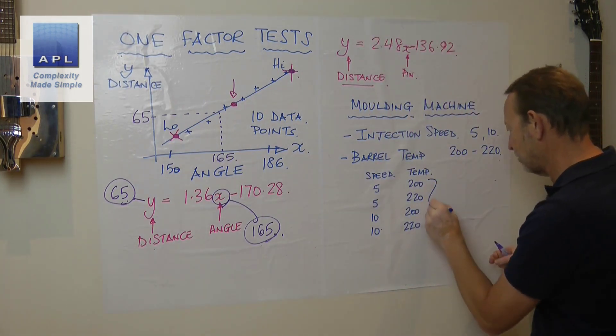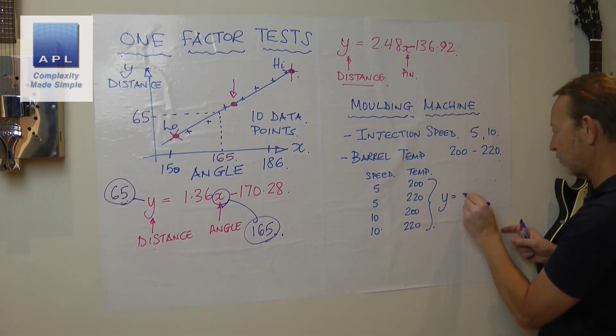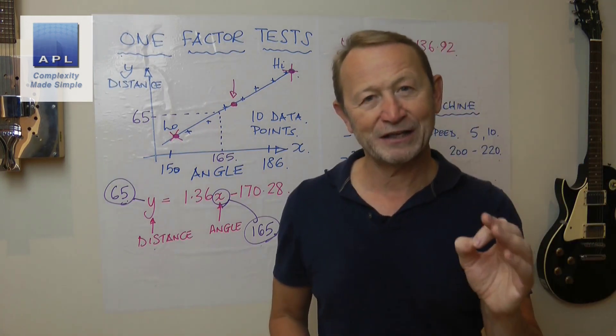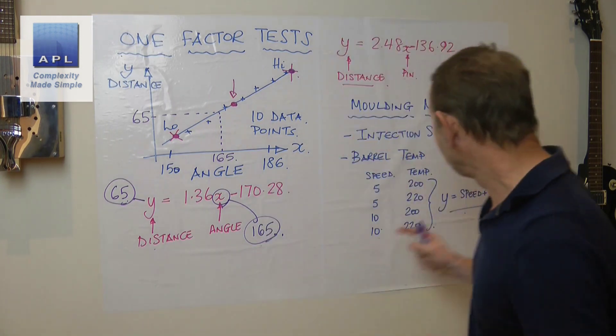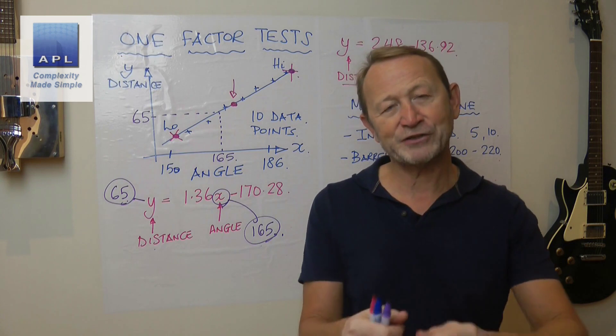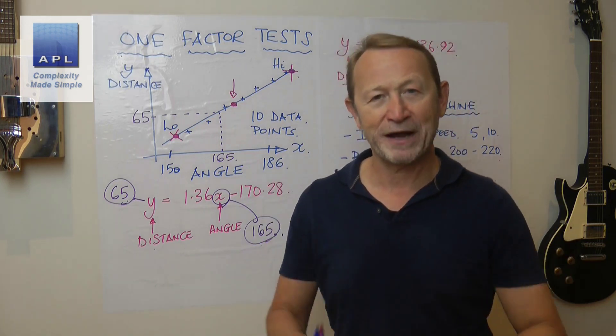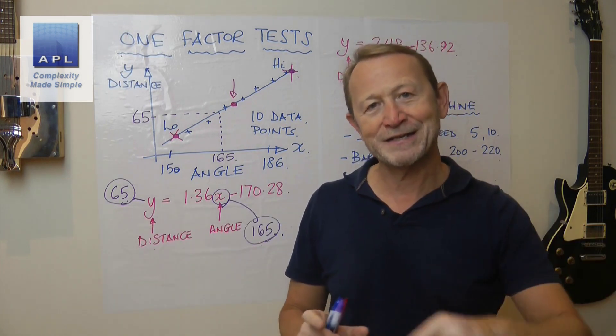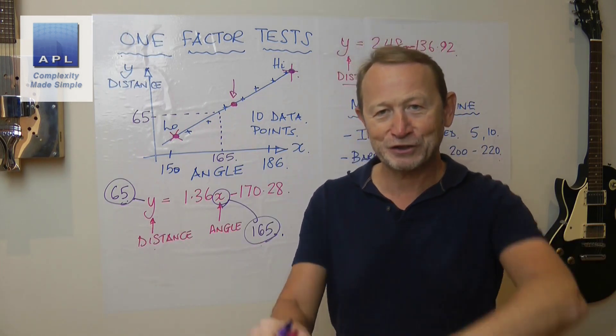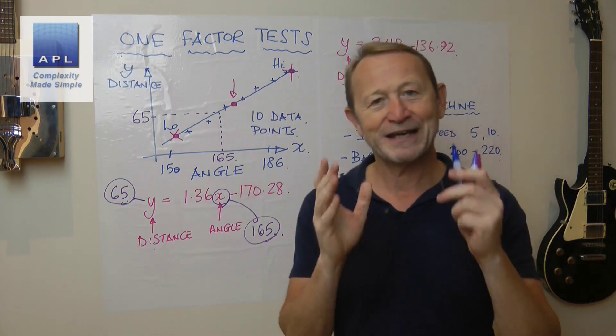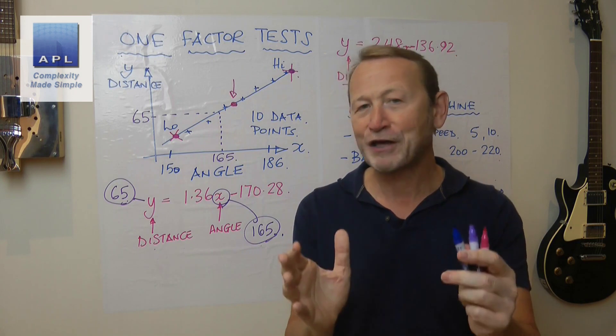What this allows you to do is create an equation where both the speed and the temperature are in the same equation. Now when I move these two, I know exactly what's going to happen. By the way, if we go back to the catapult with five variables, I could have created an equation with the pullback angle, cup height, elastic position, pin position, and stop angle all in the same equation. Now I know how my process works. I can move all five variables at the same time and predict what's going to happen.